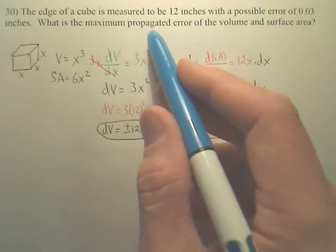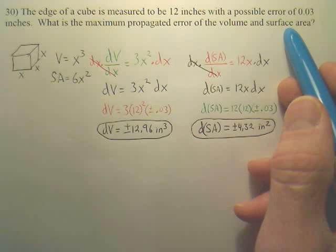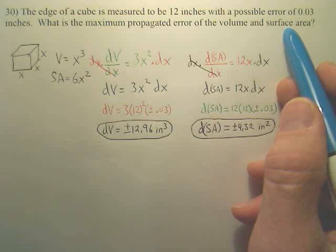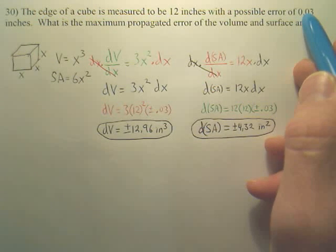What is the maximum propagated error of the volume and surface area? Meaning, how much would the surface area or volume be off by if your measurements are off by 0.03, possibly positive or negative?